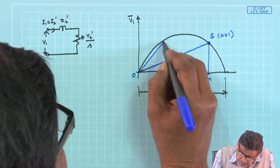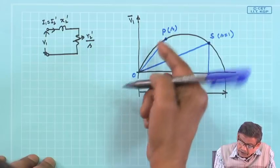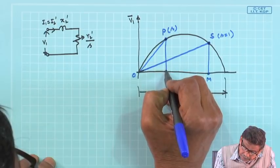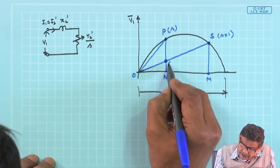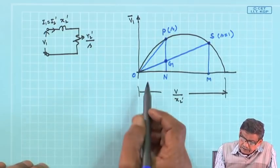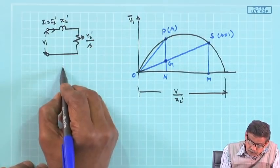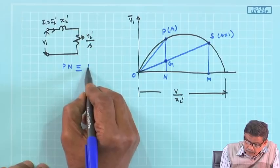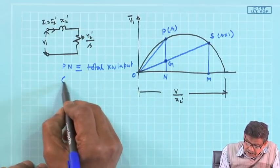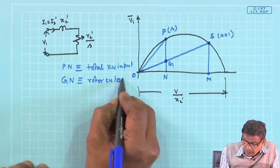When the machine operates at a general slip s less than 1, drop a perpendicular at N and label that point G. The total input power at this slip is PN. Also, GN is the rotor copper loss at this slip.